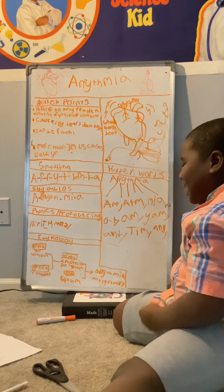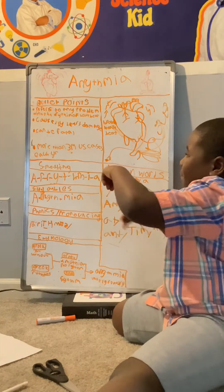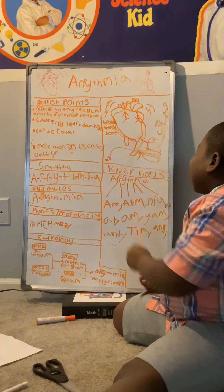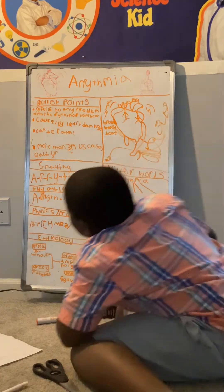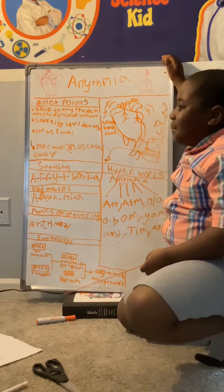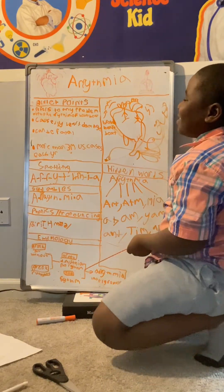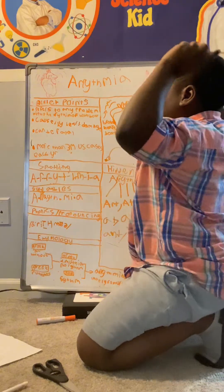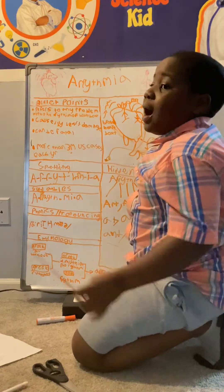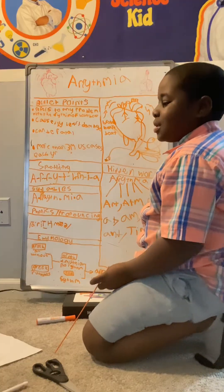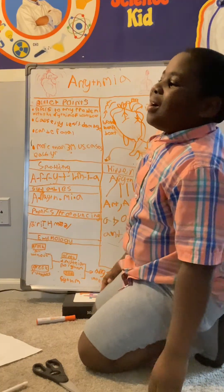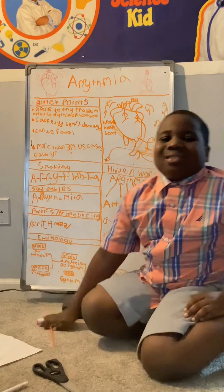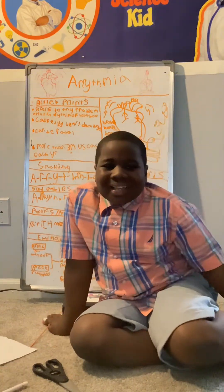Look at all of this — the bullet points, the spelling, the syllables, the phonics, the etymology, an illustration, the hidden words, and arrhythmia. Last but not least, a few more cool facts: arrhythmia is usually caused by heart damage, can be fatal, and there are more than three million cases in the U.S. Isn't that amazing? Also kind of scary. Anyway, bye, and keep on science-ing. Don't forget — the word of the week is arrhythmia.